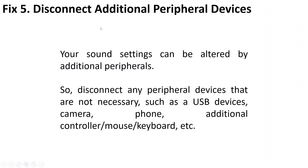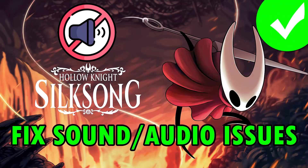Fix 5 is to disconnect additional peripheral devices. Your sound settings can be altered by additional peripherals, so disconnect devices that are not necessary — such as USB devices, camera, phone, additional controller, additional mouse, or additional keyboard — and then check if the issue is resolved. Hopefully, by following these fixes, you will be able to fix sound or audio issues in Hollow Knight Silksong.